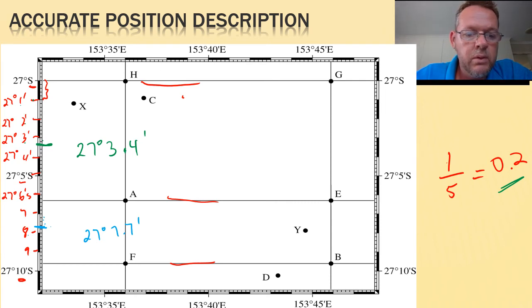Now if we look at the longitude scale across the top, the same sort of thing is happening. So we know, for example, 153 degrees and 35 minutes east. That's got to be 36.